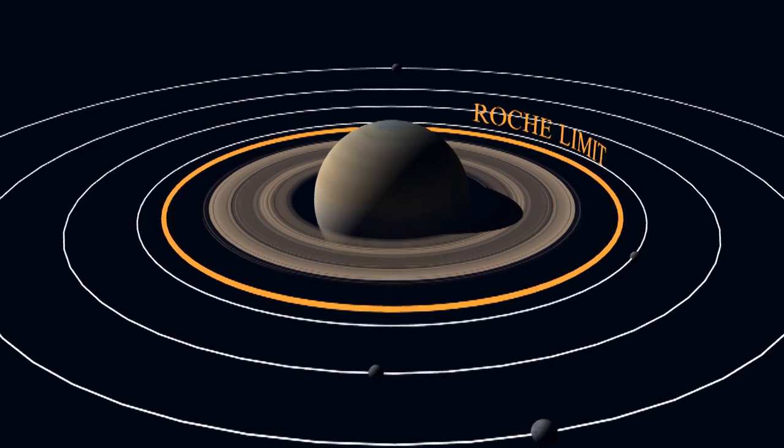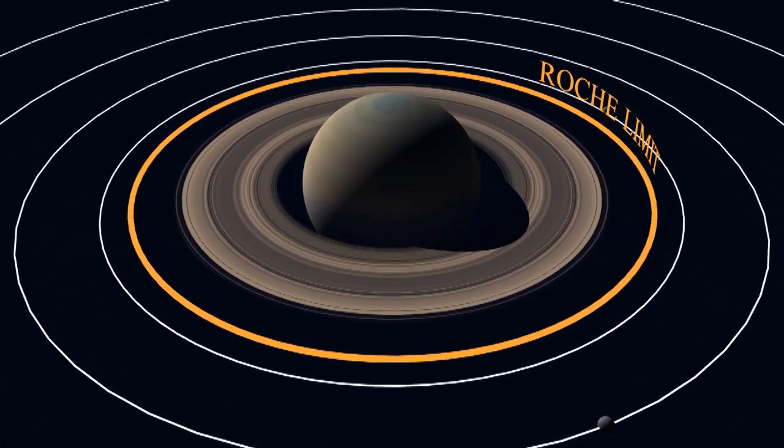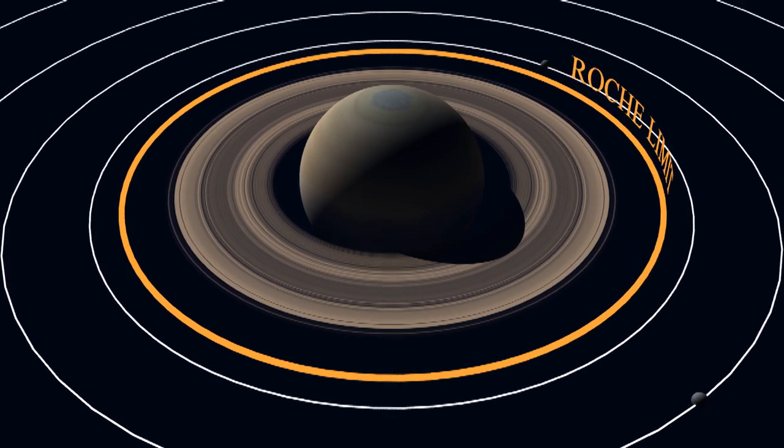Saturn's rings are inside the Roche Limit, which is why there are no moons there. Moons cannot form there because of tidal forces.